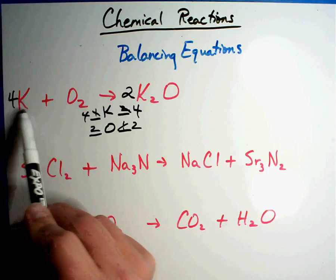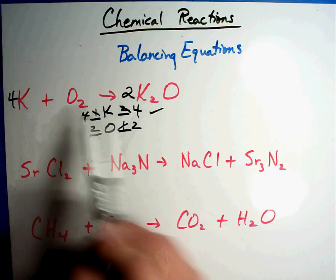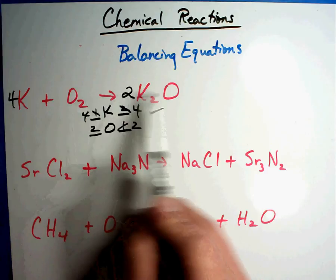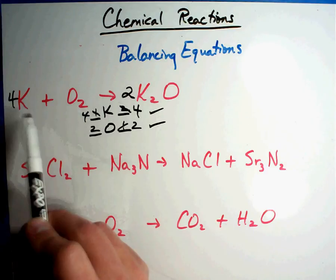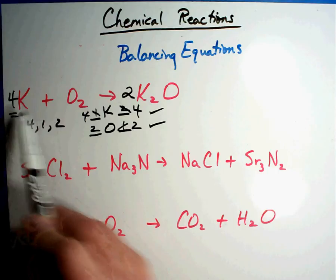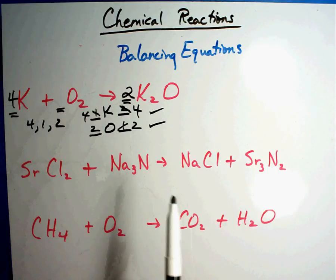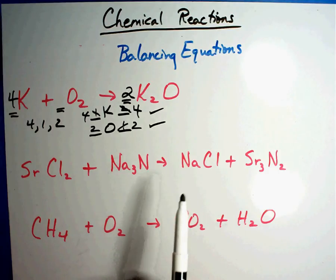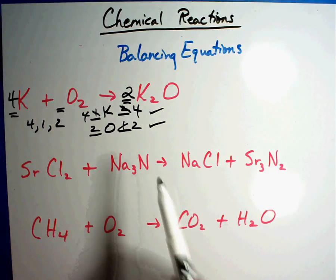Let's check it. Four K's, four K's. Two O's. That's right. Two O's and two O's. That's right. Your answer: four, one, two. Remember, you don't write the ones. If you wrote it, it's not wrong, but typically it's going to be left blank. Now, let's see how you did in the next one.